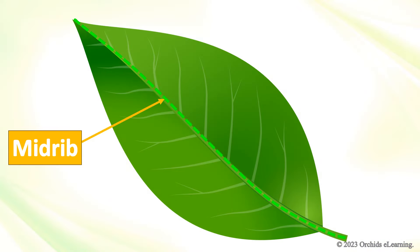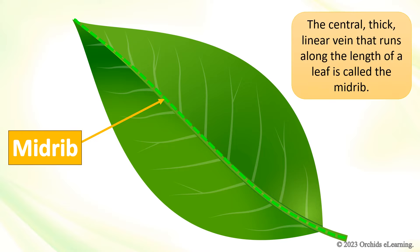Midrib. The central, thick, linear vein that runs along the length of a leaf is called the midrib.